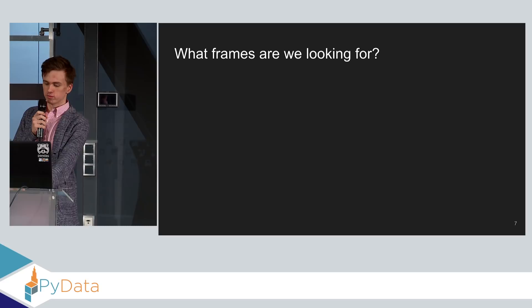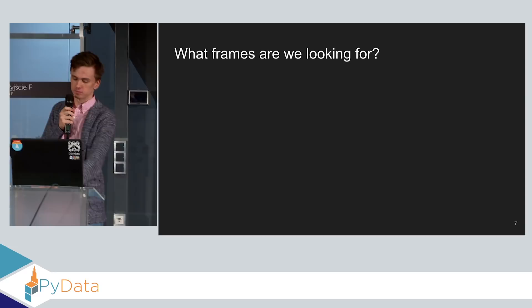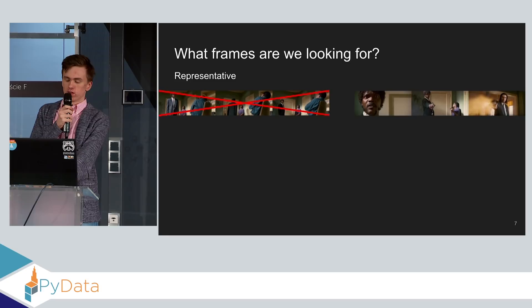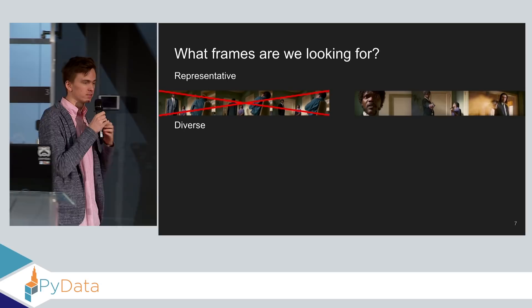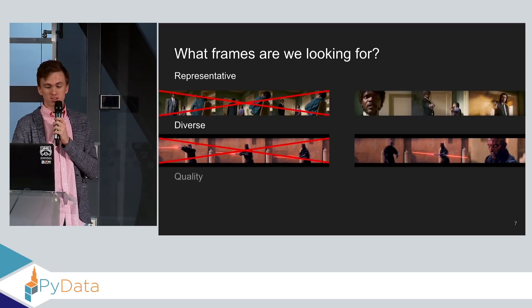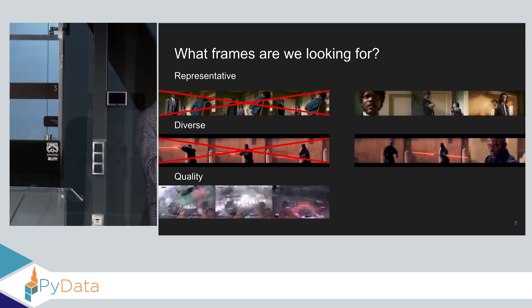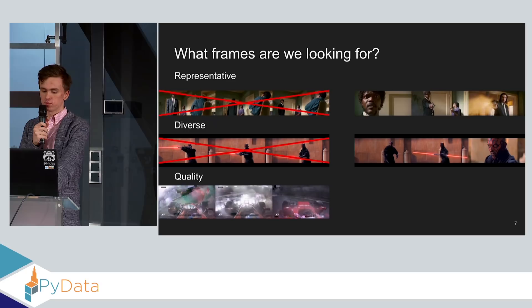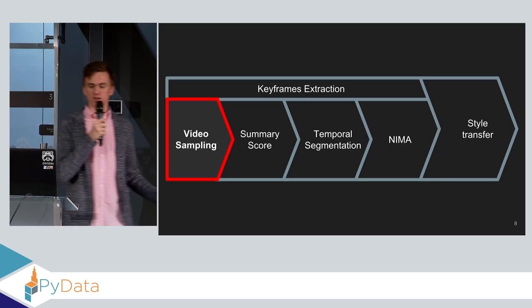Before we show our solutions, we want to ask ourselves a question: what frames are we looking for, for comics? We surely want our frames to be representative, so they tell a full story, correct story of the video. We also want our frames to be diverse, so they cover the full feature space of the video. And we also want our frames to be of good quality. We don't want to have any artifacts, any blurry images. As we need to render them later on in style transfer, all the defects in the images will be amplified. Based on these three principles, we have built our pipeline.